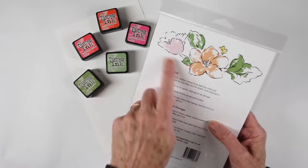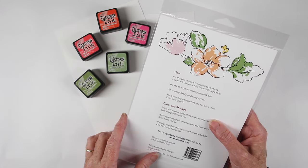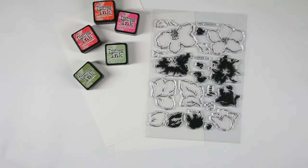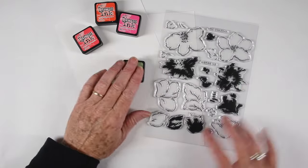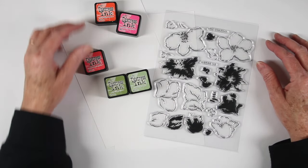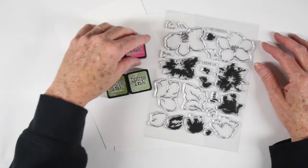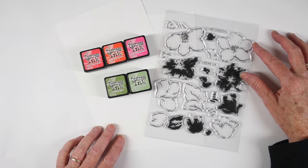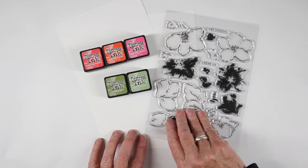If you flip over the package you can see what interiors and exteriors go together. So I'll be doing a watercolor technique and I've chosen my colors of ripe persimmon, picked raspberry, and abandoned coral, and then also peeled paint and bundled sage for my greens.